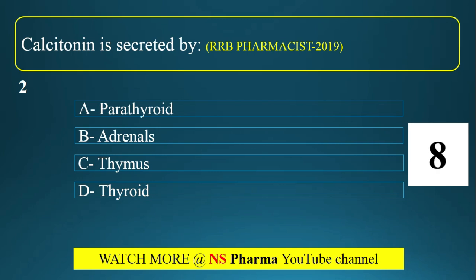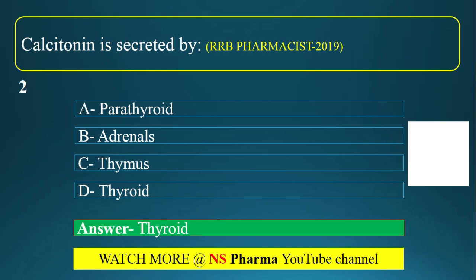You have 10 seconds to select your answer. The correct answer is Option D — calcitonin is secreted by the thyroid gland. It is confusing between thyroid and parathyroid. The hormone secreted by the parathyroid gland is parathormone.